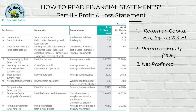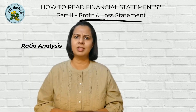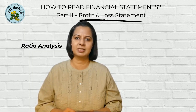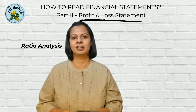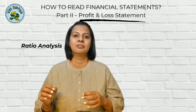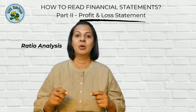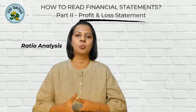Net profit margin is a ratio that measures the profitability of a company by comparing the net profit to the revenue. It represents the percentage of profit earned for each unit of revenue and helps assess the company's ability to generate profits and manage expenses. At 8.01%, Titan Limited is not bad. But we must remember that when analyzing a company's financial statements, we must look at the industry average for the ratios as well as the ratios of the company's peers, so we can evaluate where the company stands when we look at the bigger picture.